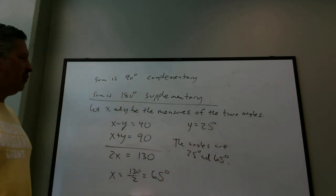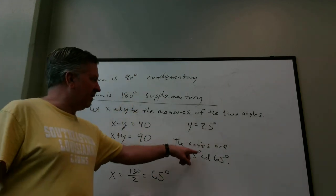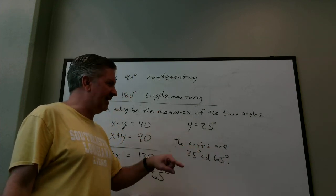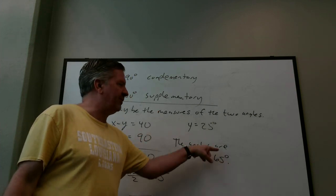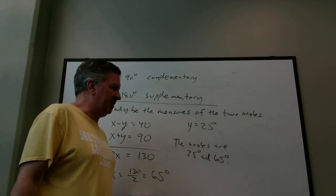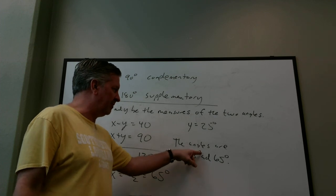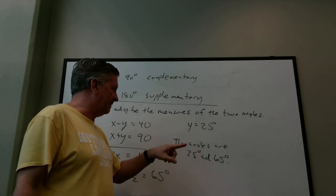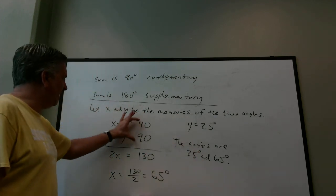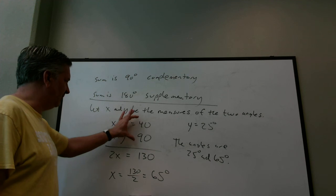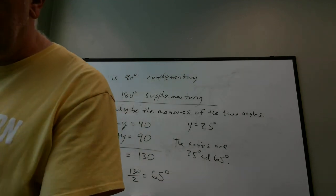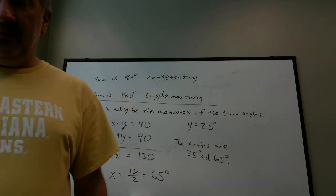Whenever you mean degrees, you need to be writing a degree sign. When we get to radians, if you leave off the degree sign you're telling me radians, which would be wrong. So here you need the degree sign. In calculations you don't need them mid-step, but put them at the end.